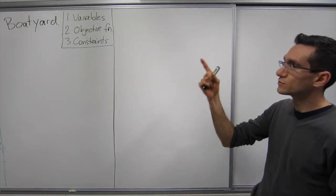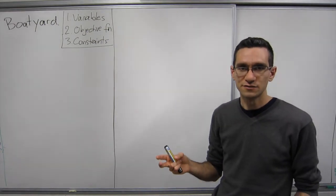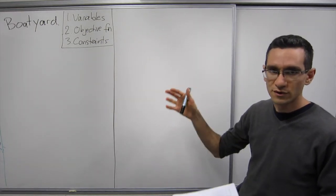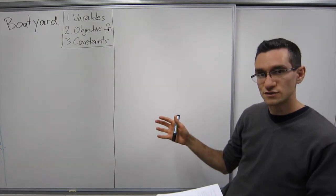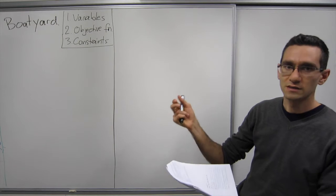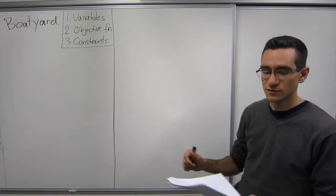First we want to find our variables, second we want to find our objective function and third we want to come up with the constraints. Then we've got it as a system of inequalities and a function we want to find the maximum or minimum of and then we can solve that.